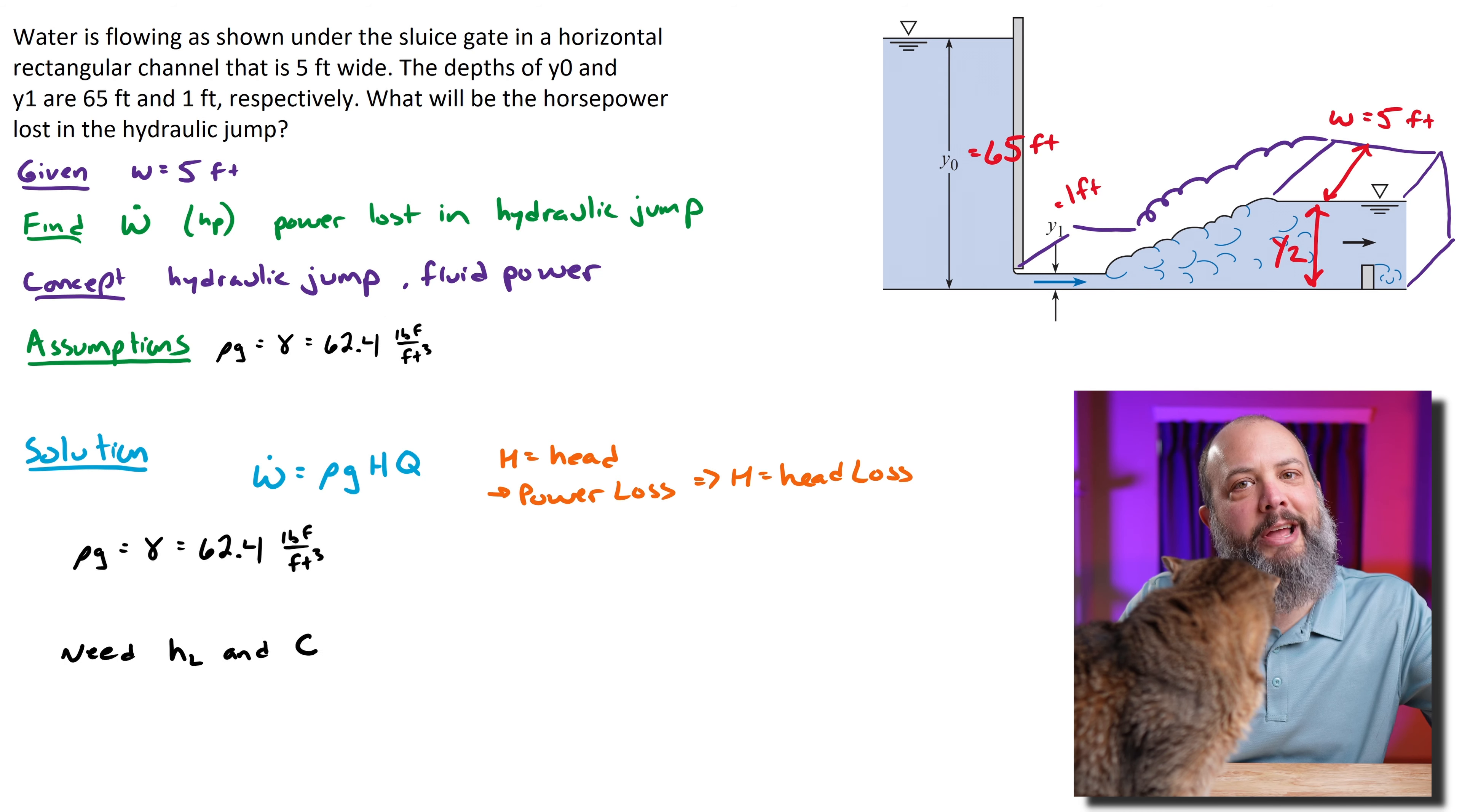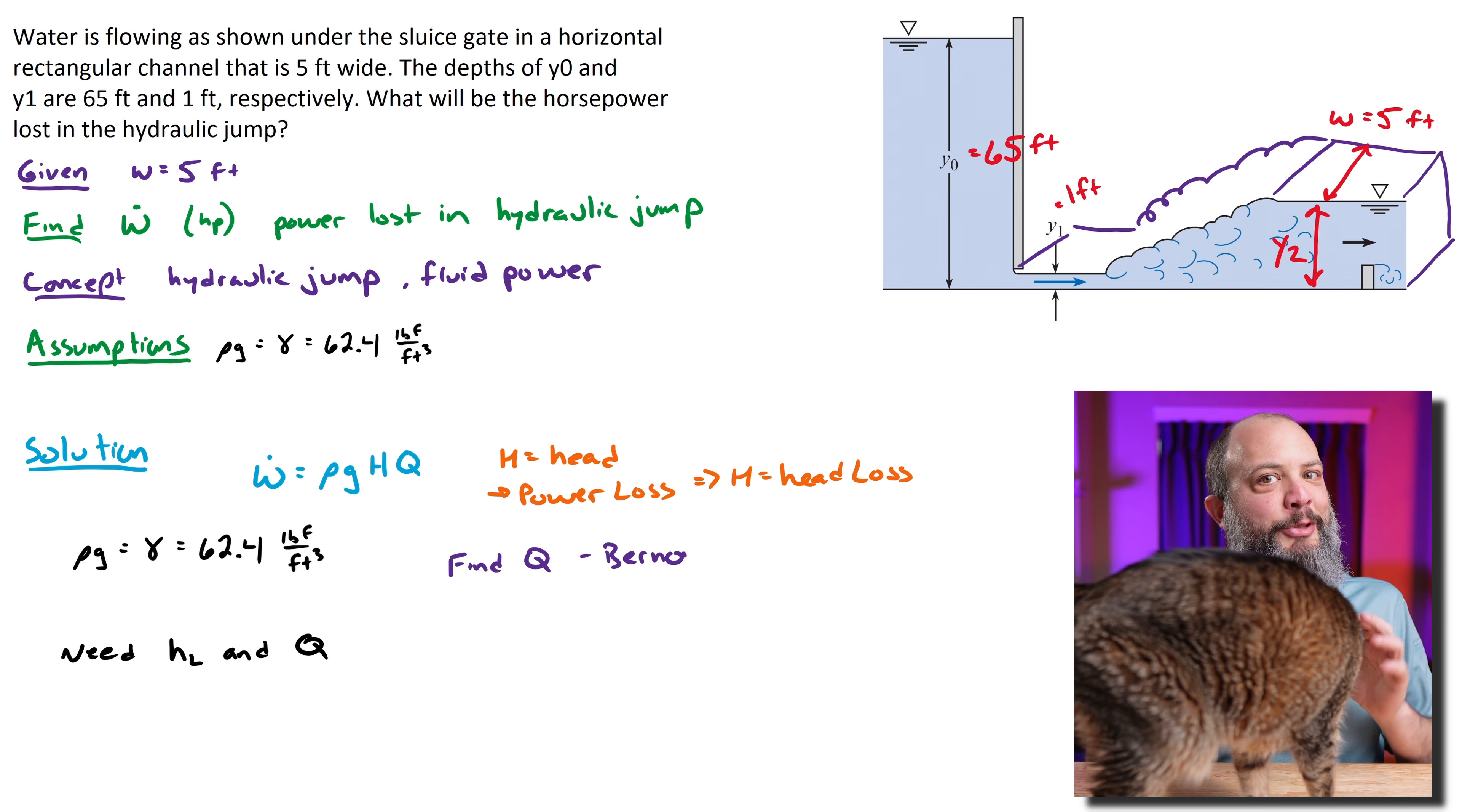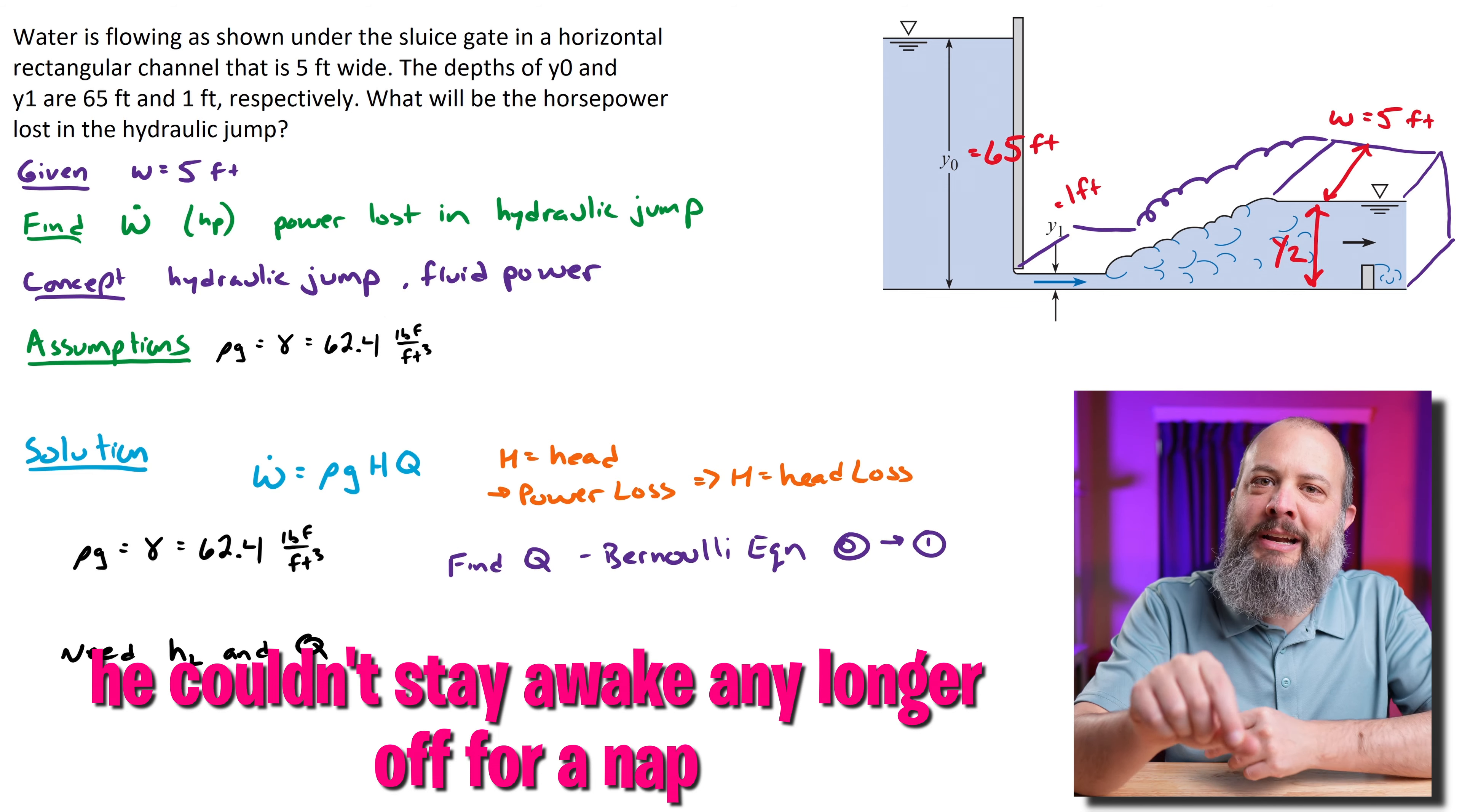For Bernoulli equation I need to identify two different points where I have the most information possible, because that'll leave the least number of unknowns. I'll choose point 0 at the top of the tank and point 1 right at the bottom, right at the exit of the sluice gate where I know elevation.